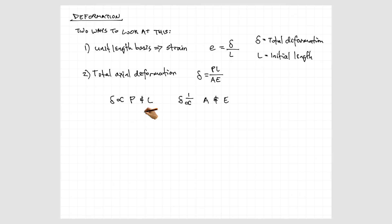In this equation, P is our total load, L is the length of the member, A is the cross-sectional area, and E is the modulus of elasticity. We can see that the deformation is directly proportional to both the force and the length, but it's inversely proportional to the cross-sectional area and the modulus of elasticity.